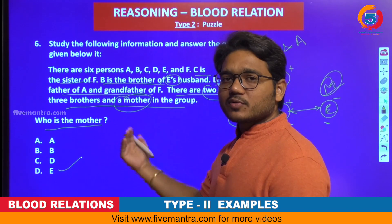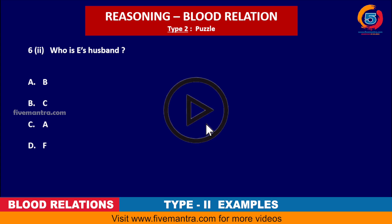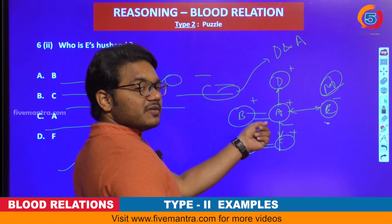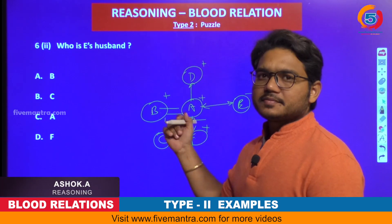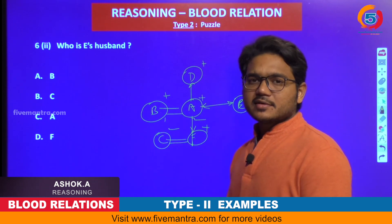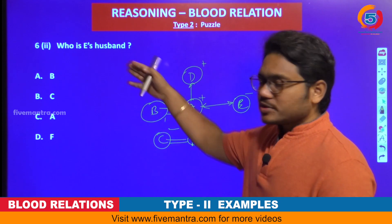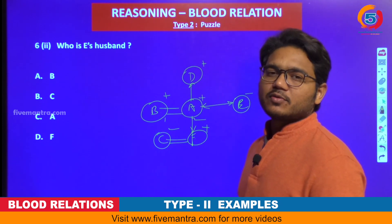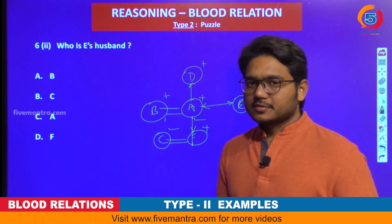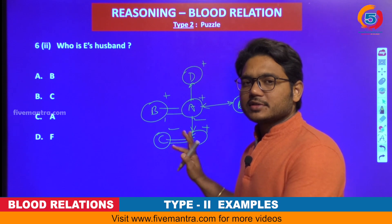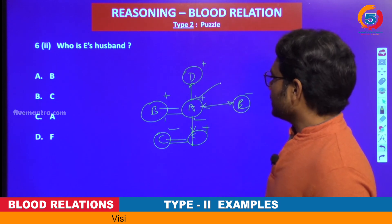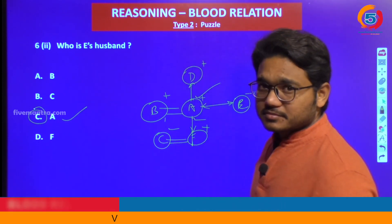Let us see what other questions are given. One more question using the same relationship tree. What is the question? Who is E's husband? Once we draw this relationship tree, whatever number of questions are given, we can easily trace out the answers. The answer is obviously A.